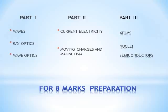The chapters are divided into 3 parts. Under Part 1, chapters are wave, ray optics, and wave optics. Under Part 2, chapters are current electricity and moving charges and magnetism. Under Part 3, chapters are atoms, nuclei, and semiconductors.